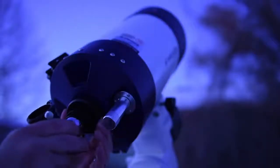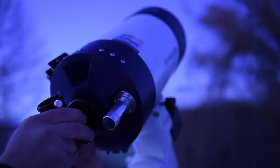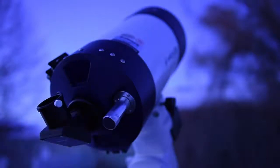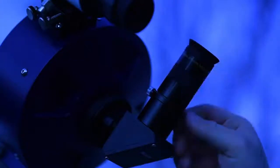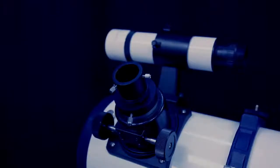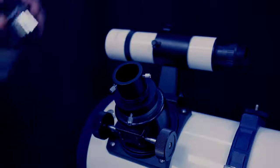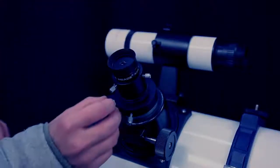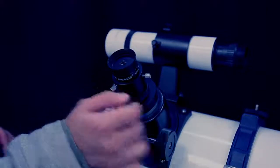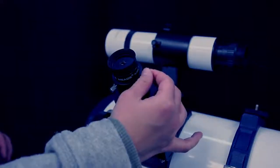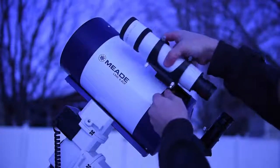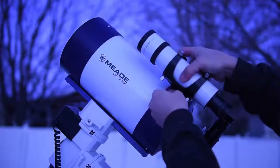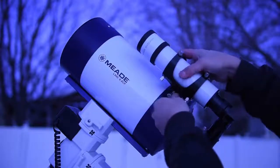Install all of the accessories onto the mount. For MAC, refractor, and ACF users, insert the diagonal mirror and secure it with the locking thumb screw. Then install the 26mm eyepiece. Install the eyepiece directly into the focuser draw tube and secure into position using the locking thumb screws. Start with the lower power 26mm eyepiece when possible. Insert the 8x50 finder scope into the finder scope bracket and secure it to the telescope with the locking thumb screws.